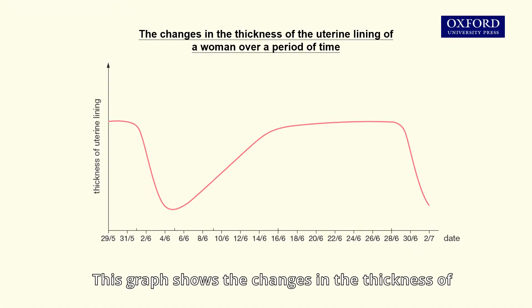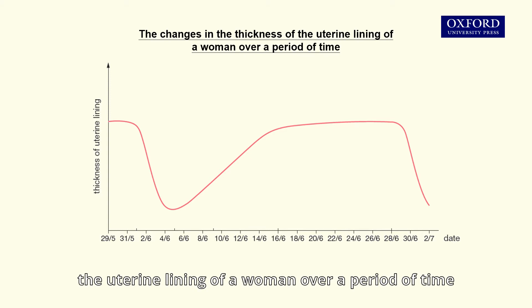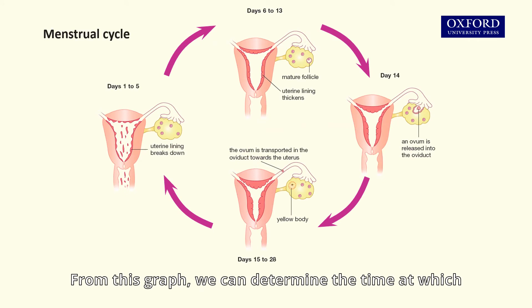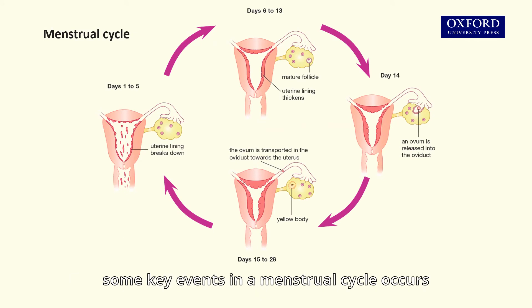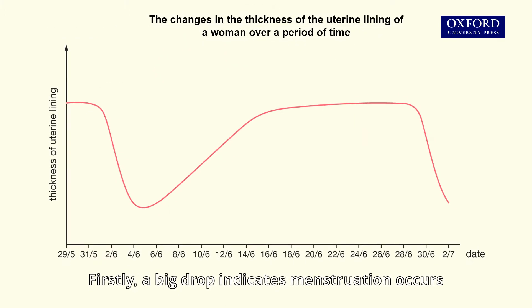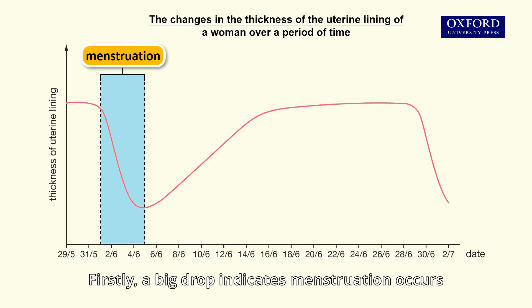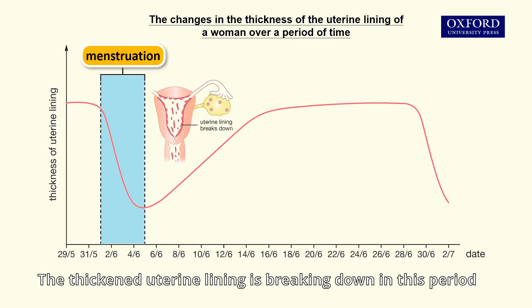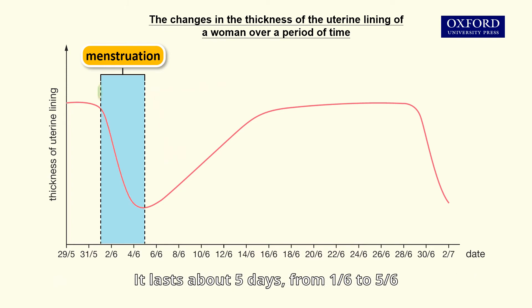This graph shows the changes in the thickness of the uterine lining of a woman over a period of time. From this graph, we can determine the time at which some key events in a menstrual cycle occur. Firstly, a big drop indicates menstruation occurs. The thickened uterine lining is breaking down in this period. It lasts about five days, from the 1st of June to the 5th of June.